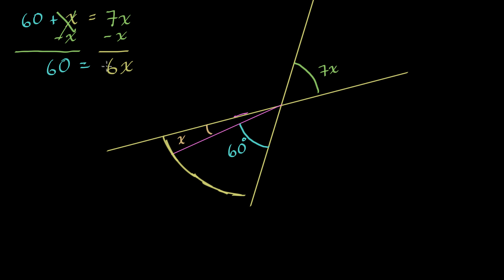So we have 6 times something is equal to 60. You could probably figure that out in your head. But I will do it a little systematically. We can divide both sides by 6 to solve for x. So let's do that. And we would be left with x is equal to 60 divided by 6 is 10.